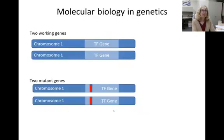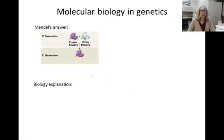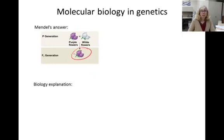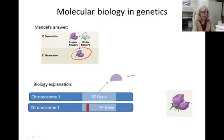So if an organism has two working copies of the allele, it makes the pigment and the flower is purple. If an organism has two broken copies of the gene, it cannot make the pigment and the flower is white. But what about a heterozygote? Mendel showed us what would happen — all the heterozygotes were still purple. When a pea plant receives a working gene from one parent and a mutant nonfunctional gene from the other parent, the working gene produces enough transcription factor to turn on the anthocyanin-making gene, which makes a purple flower with plenty of pigment.